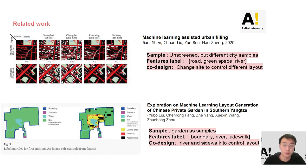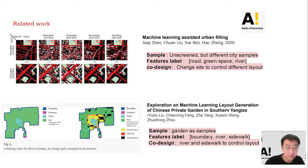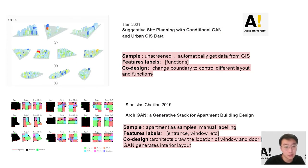In a previous paper, we found that using Shanghai's GAN model for the generation of Chengdu city leads to unreasonable urban plan distribution. Therefore, targeted sampling can help us train a GAN that is better suited to the design constraint and context. However, this kind of selection work requires a lot of manual time. Many studies have treated physical site constraints as feature labels for GAN — for example, a GAN model for site planning can only change the boundary to control the layout because the feature labels are boundary and function. The way of co-design depends on what feature labels we have chosen.